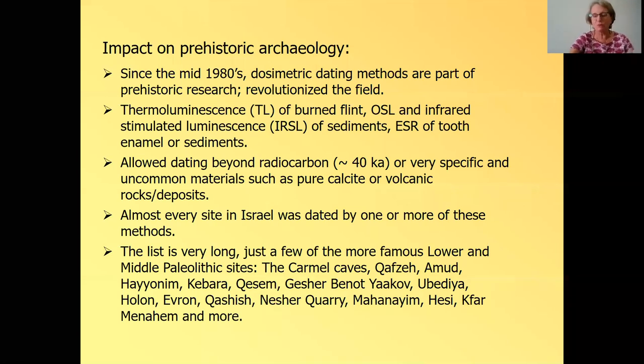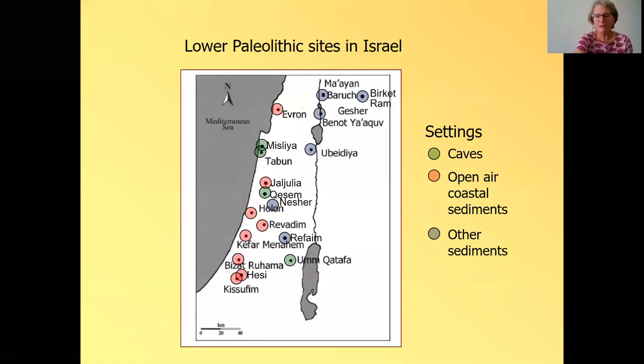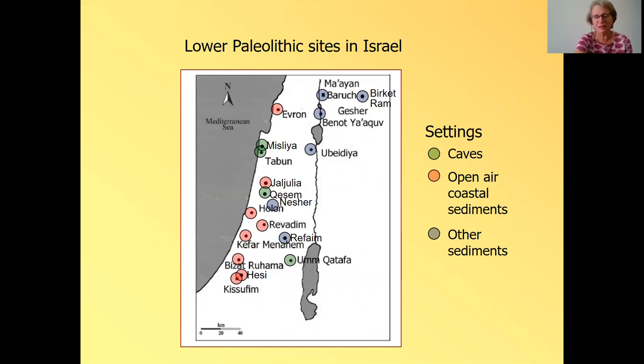So this thermoluminescence of burnt flint, OSL and infrared stimulated luminescence IRSL of sediments, ESR of tooth enamel and ESR of sediments. And it allowed dating beyond radiocarbon or beyond very specific and uncommon materials such as pure calcite speleothems, flowstones, or volcanic rocks and deposits. Almost every site in Israel was dated by one or more of these methods.